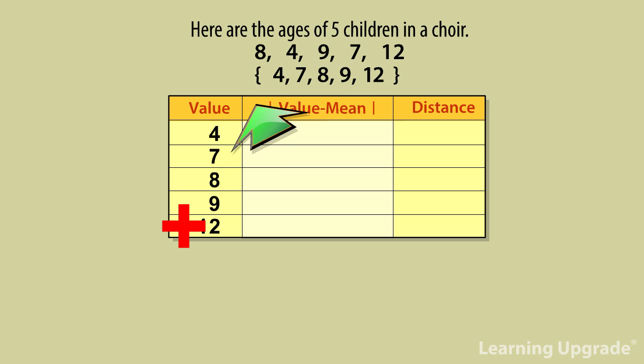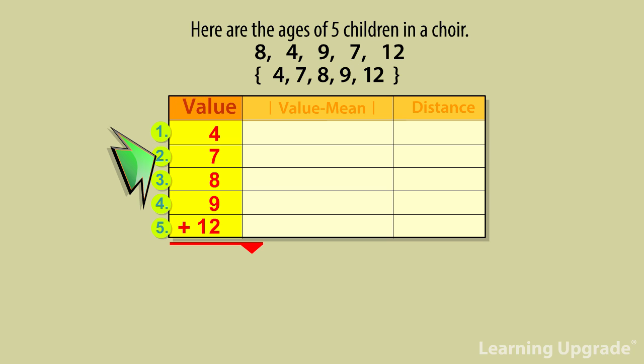Add up the ages of a five-member student choir: 4 plus 7 plus 8 plus 9 plus 12 equals 40 years.